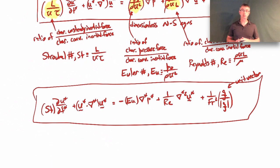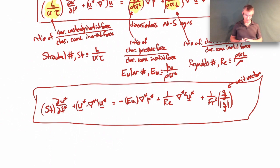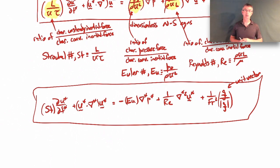So these dimensionless parameters — Strouhal number, Euler number, Reynolds number, and Froude number — show up naturally because they're part of the equations of motion of fluid mechanics. If you're going to model a fluid flow, you'd expect these dimensionless parameters to show up because they're built right into the governing equations. Each one is a ratio of forces.